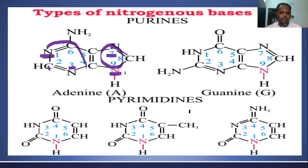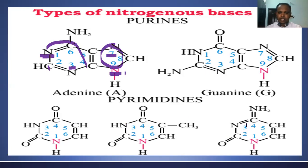For pyrimidine bases, there are three pyrimidine bases: first is uracil, second is thymine, and third is cytosine. The difference between thymine and uracil: uracil has a double bond O at positions two and four.